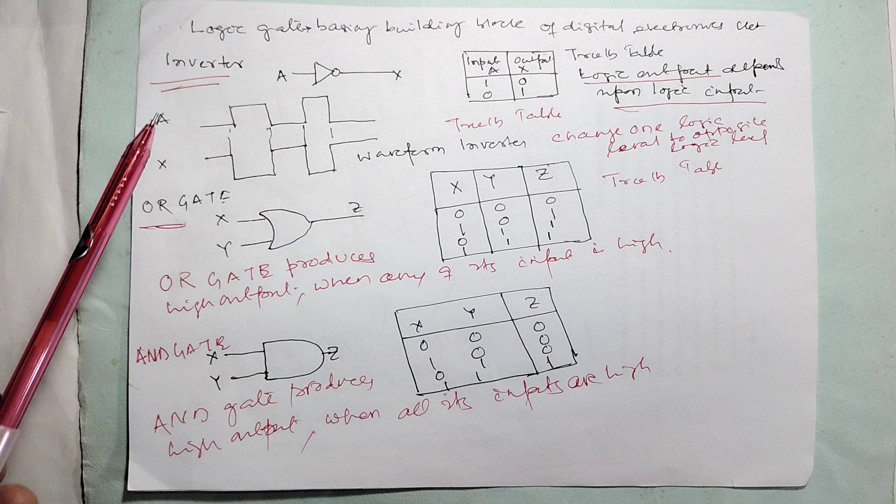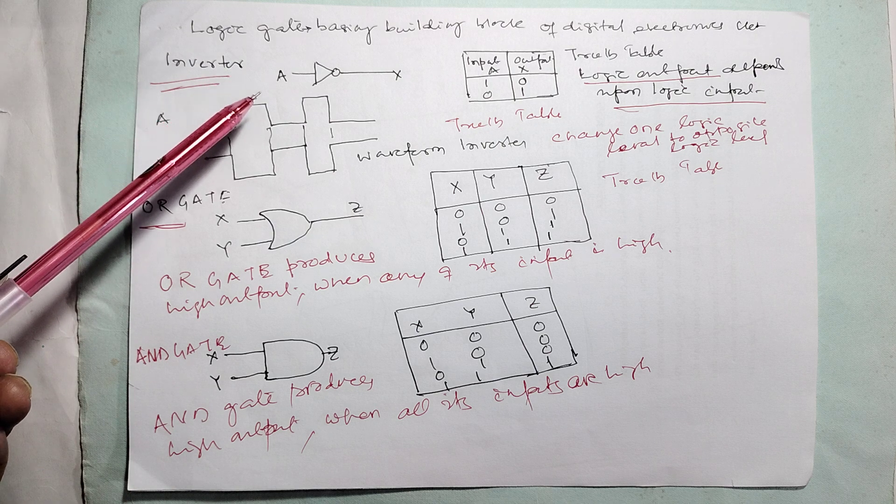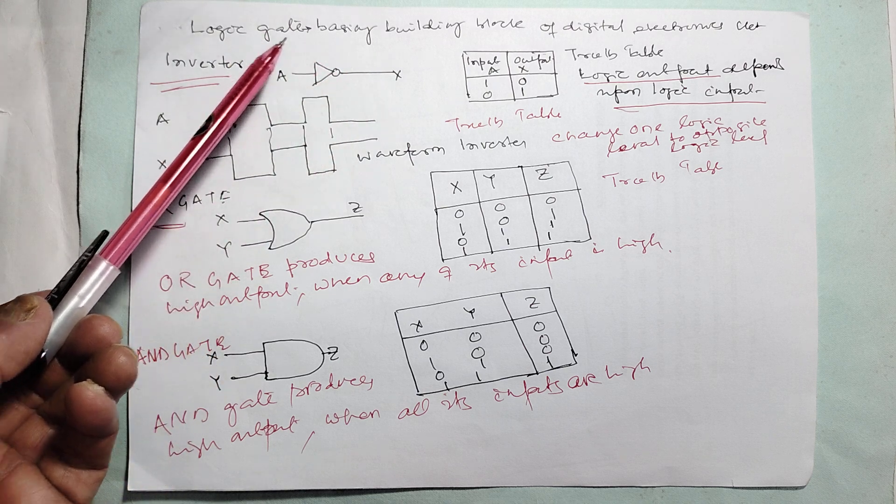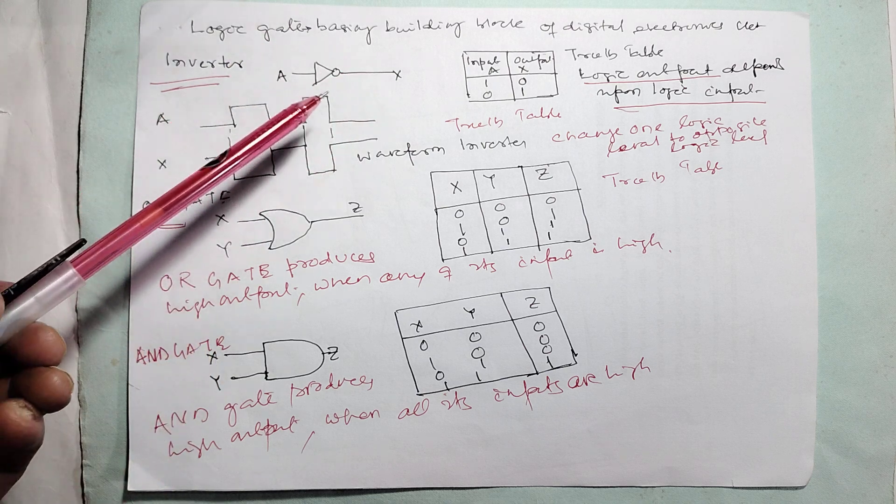This is a logic gate Inverter. Inverter means if the input is 1, the output will be 0. If the input is 0, it is 1. If it is on, it is off. If it is off, it is on.